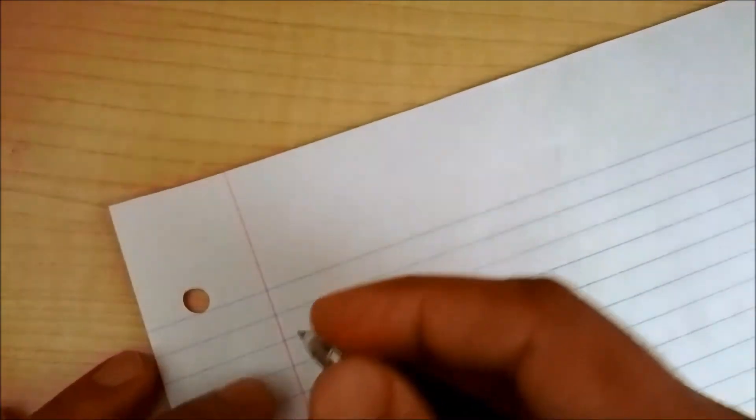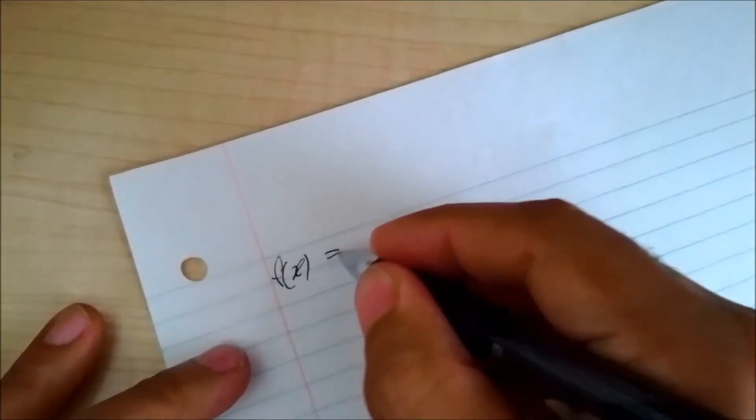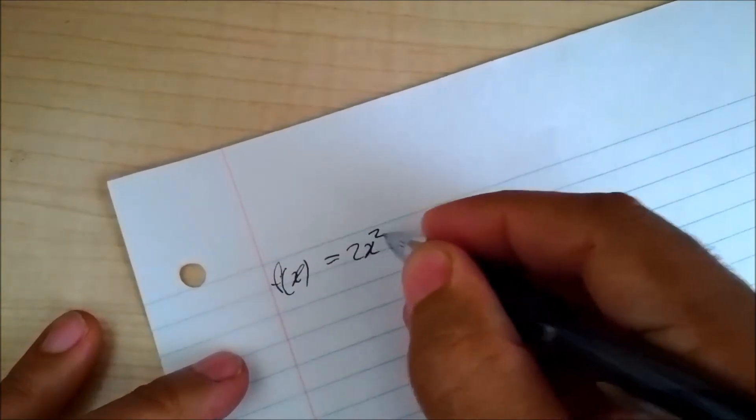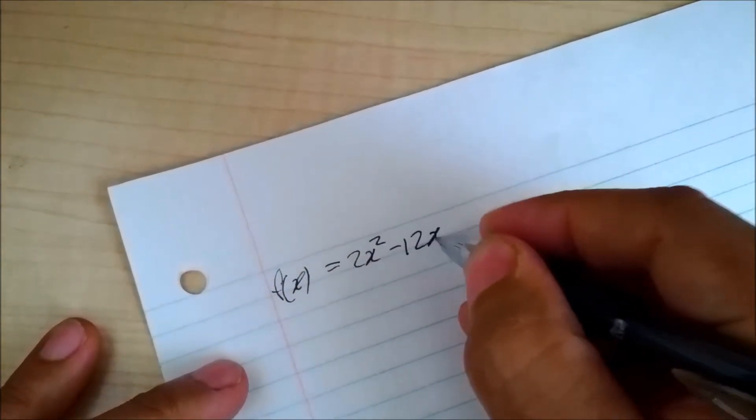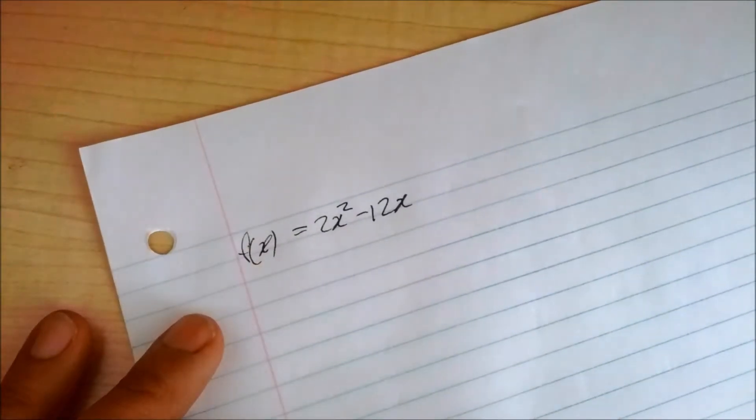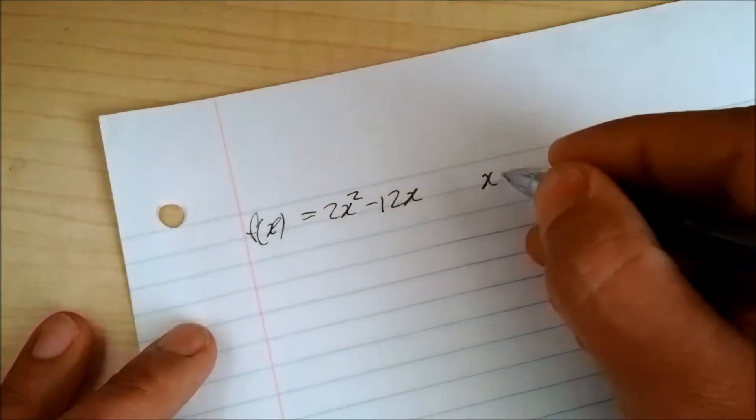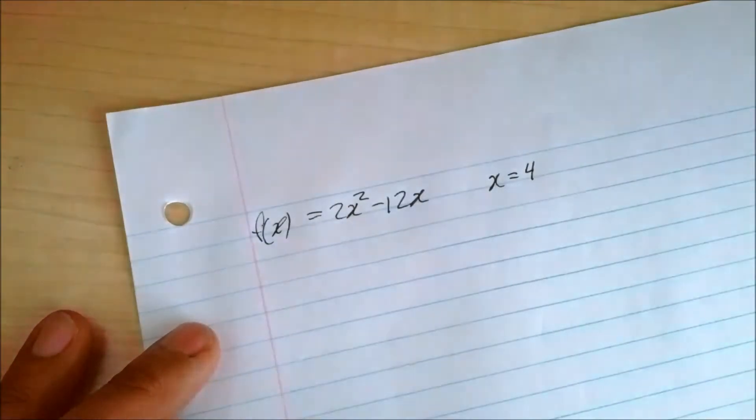In this video, I'm going to show you how to find the tangent to the curve at a specific point. So, an example is if a curve is defined at 2x to the power of 2, negative 12x, at x equals 4.